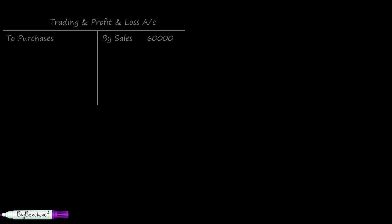Purchases: 20,000 — these are purely cash purchases. Salary: 10,000, fully paid with no outstanding salary included, so it is fully cash-paid salary. From this trading and profit and loss account, we find that the net profit for this business is 30,000.